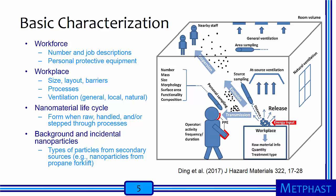We also need to follow the life cycle of the nanomaterial: what is the form of the nanomaterial when it is raw, handled, and/or stepped through each of the processes in the workplace? Lastly, we need to characterize other sources of particulate in the workplace, such as nanoparticles emitted from a propane forklift truck. A thorough knowledge of these sources helps us select the proper sampling equipment and properly interpret results.